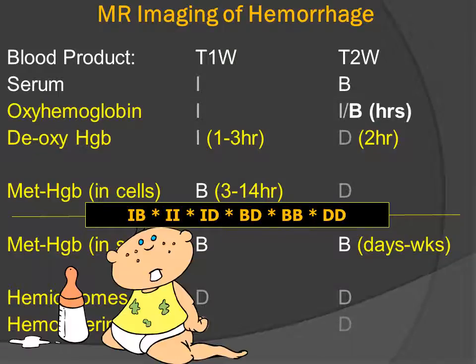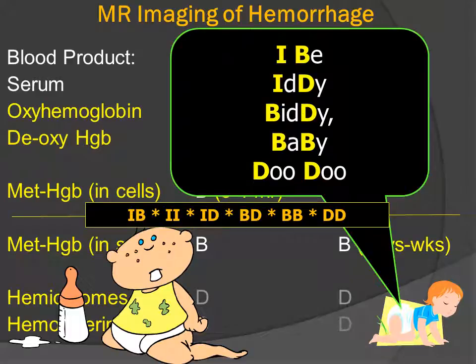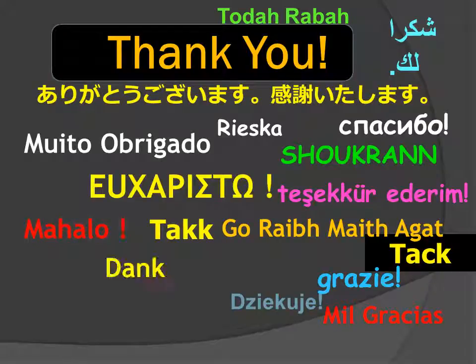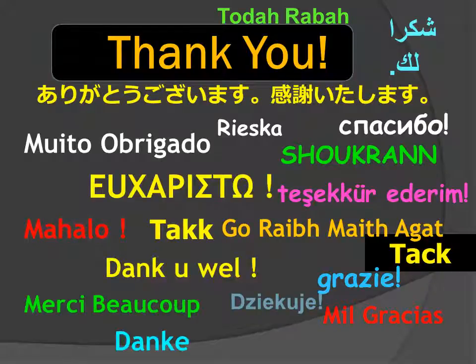But even this is hard to remember. So a good mnemonic tool is to remember: IB — itty-bitty, baby-doo-doo — iso-bright, iso-dark, bright-dark, bright-bright, and dark-dark in chronic hemorrhage with hemocytorin and ferritin. This has been Jim Smyrniotopoulos, and I approve this message. Thank you very much for your kind attention.